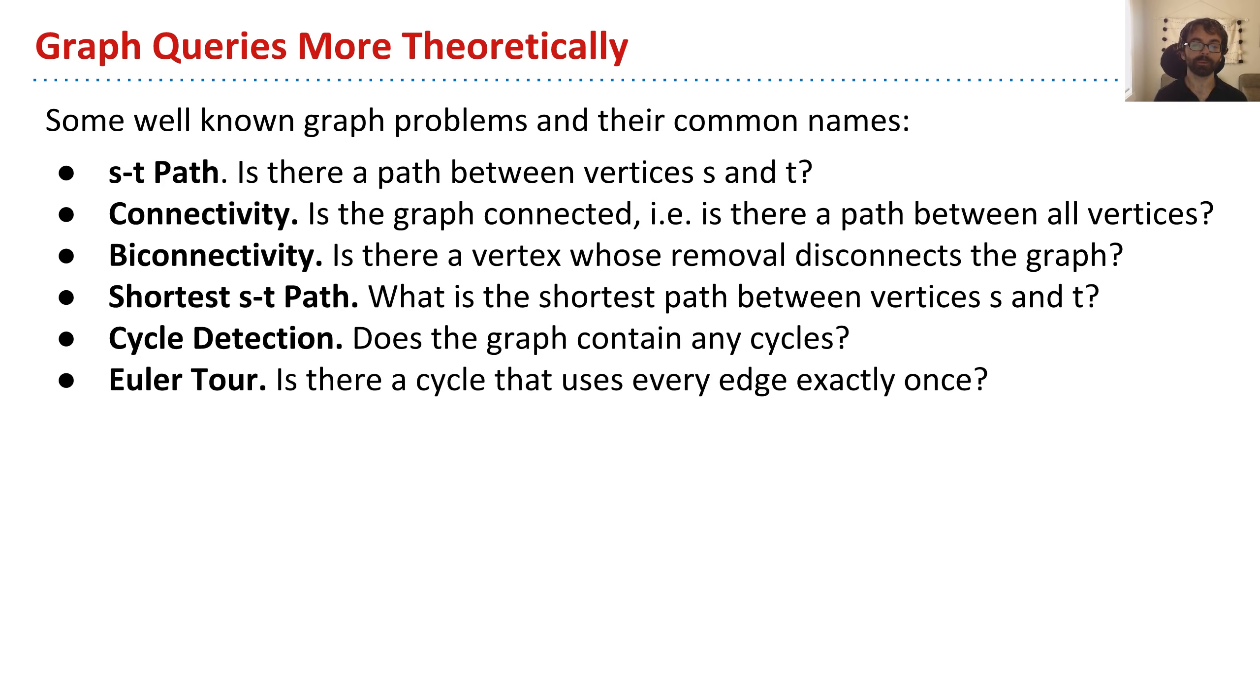The Euler Tour problem, which we saw in the subway map example, is there a cycle that uses every edge exactly once? So it's a tour of the system. And the related problem, the Hamilton Tour, is there a cycle that uses every vertex exactly once? This is edges, and this is vertices.